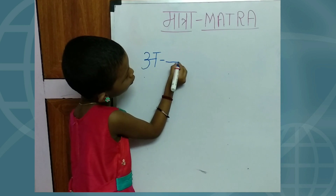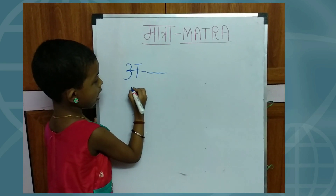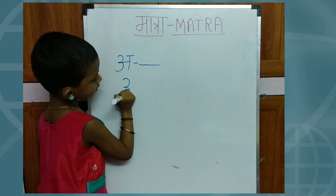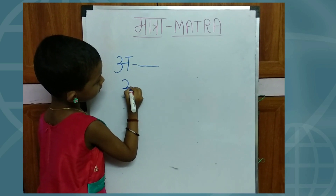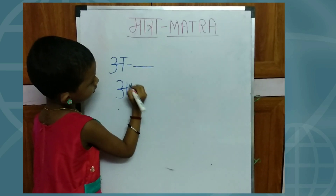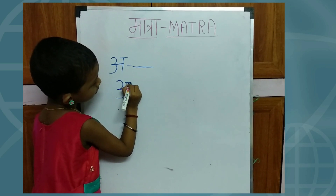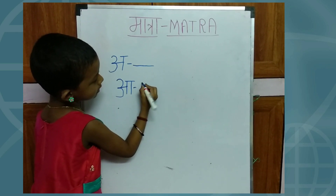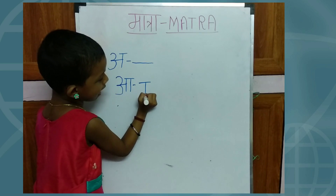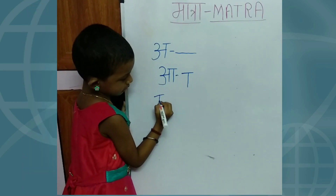No matra. Now let's learn matra. One sleeping line, one landing line, right side curve — E ki matra.